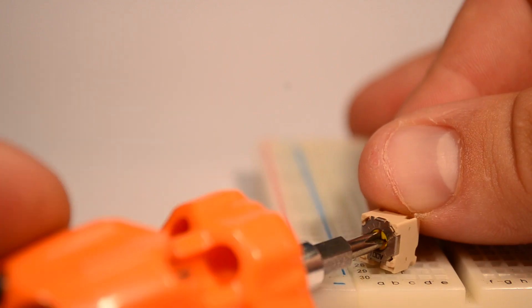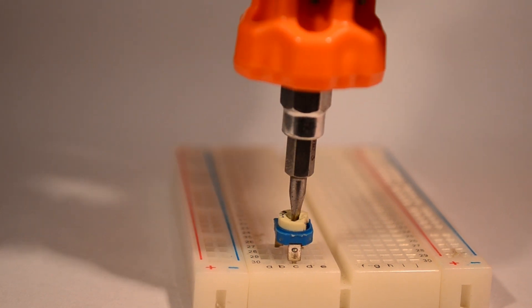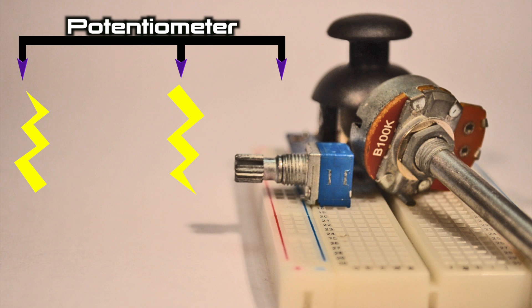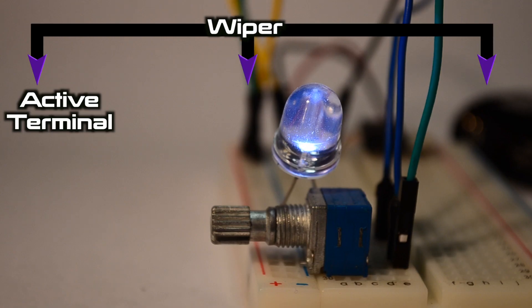As you adjust the pot, the distance between the wiper and the fixed lead on one side of the potentiometer changes. If an electrical current is passed into one side of the potentiometer and out through the wiper, the resistance can be decreased by moving the wiper toward the fixed lead and increased by moving it away.